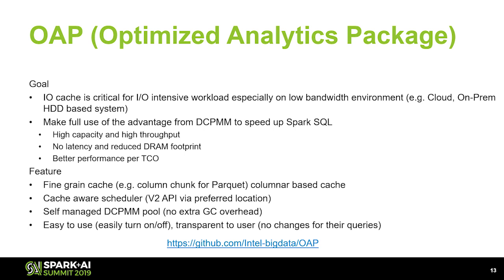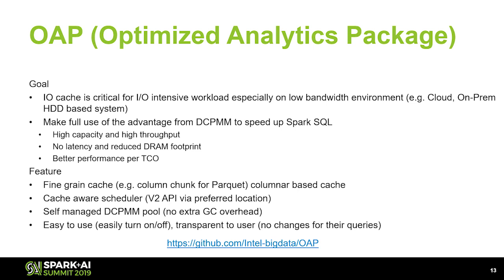The first use case begins with Spark SQL. The OAP project — Optimized Analytic Package — is available from the website and totally free to use. The goal is to use OAP IOCache to address problems for IO-intensive workloads, especially for on-premises hard disk users and cloud users. We also want to leverage Optane DC Persistent Memory to speed up Spark SQL using high capacity, high bandwidth throughput, low latency, reduced DRAM footprint, and better TCO.